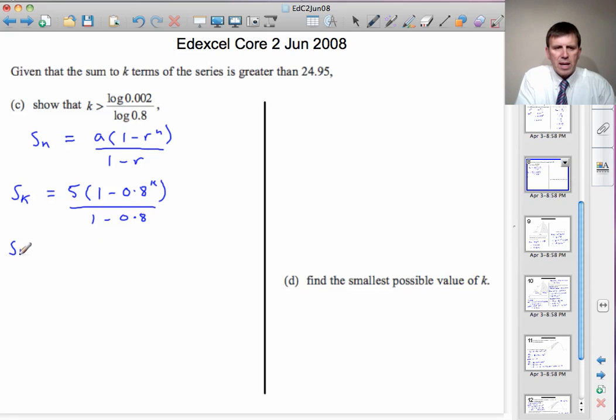So S k is equal to, now 1 minus 0.8 is 0.2, a fifth, and 5 divided by a fifth is 25. So we've got 25 multiplied by 1 minus 0.8 to the power k. And we're told that has to be bigger than 24.95.